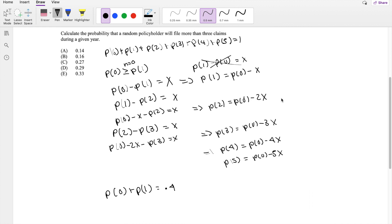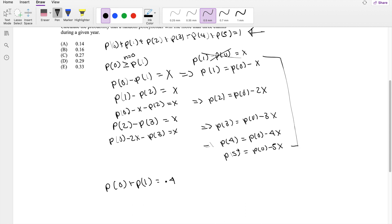We can plug everything we have here into our statement here. So then, and I'm going to put it all in terms of probability of 0 to make it easier, because the less variables we have, the easier it is for us to figure it out. So then probability of 0 plus probability of 1, probability of 1 we know to be this here, so probability of 0 minus x, plus probability of 2, which we know to be here, probability of 0 minus 2x, probability of 3 is probability of 0 minus 3x, probability of 4 is probability of 0 minus 4x, and finally probability of 0 minus 5x must all be equal to 1.